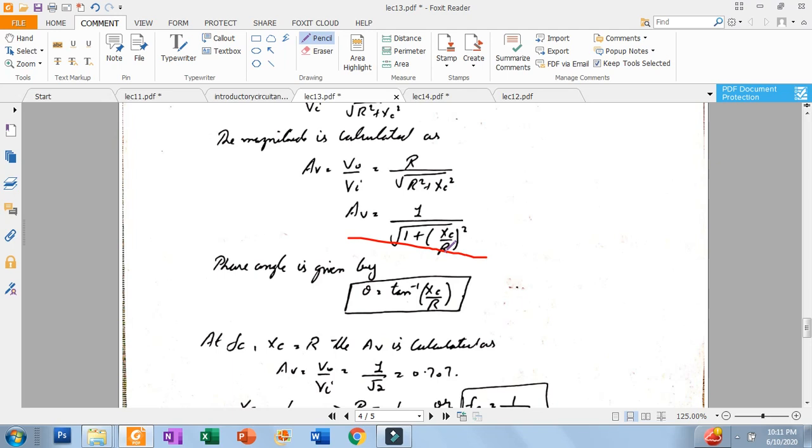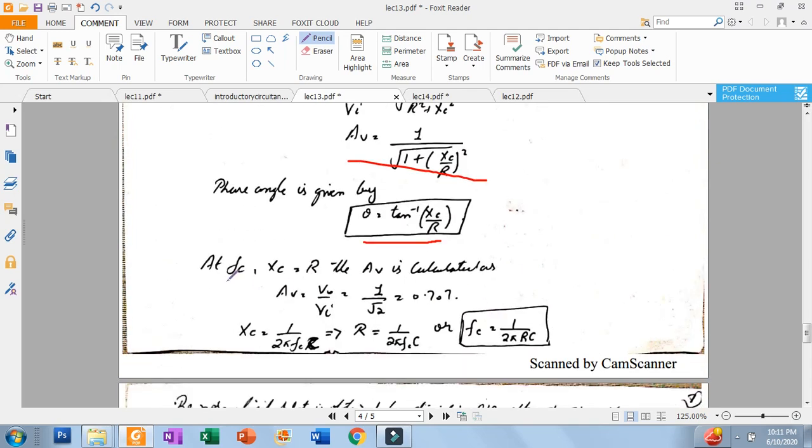Remember that high pass filter and low pass filter have similar formulas. Phase angle theta equals inverse tan XC over R. V out over Vi is 0.707 and critical frequency is 1 by 2 pi RC, same formula here.